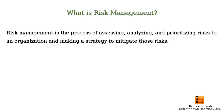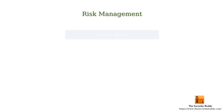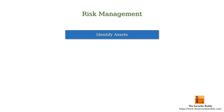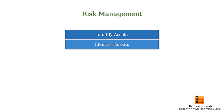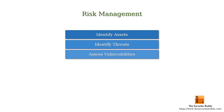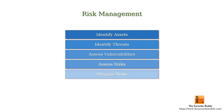Risk management is the process of assessing, analyzing, and prioritizing risks to an organization and making a strategy to mitigate those risks. A risk management process consists of five steps: identify assets, identify threats, assess vulnerabilities, assess risks, and mitigate risks.